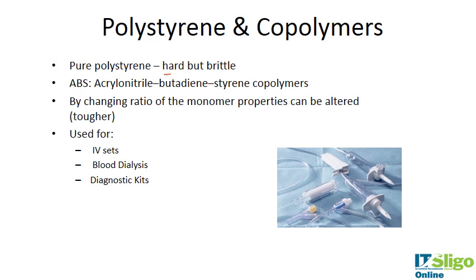Pure polystyrene is hard and brittle, which aligns with where it is used. A related polymer, acrylonitrile butadiene styrene copolymer, or ABS, is the tough polymer that Lego bricks are made from. By changing the ratio of monomers, properties can be altered to make it very tough. ABS is used in IV sets, blood dialysis equipment, and diagnostic kits, as well as in tissue culture where toughness is required.